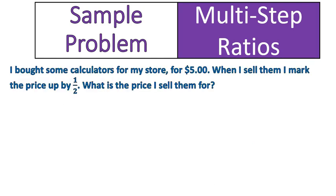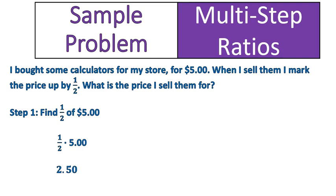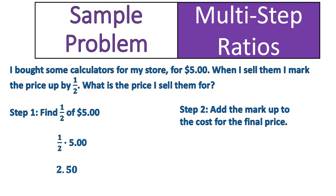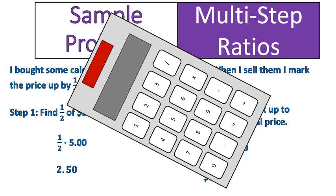Another sample problem: I bought some calculators for my store for $5. When I sell them, I mark the price up by one-half. What is the price I sell them for? We're going to do the same thing — two steps. First step is to find one-half of $5. The markup price is one-half of what I paid for them, so one-half times $5 gives me $2.50. In step two, I add the markup to the cost: $5 plus $2.50 gives me a total of $7.50.